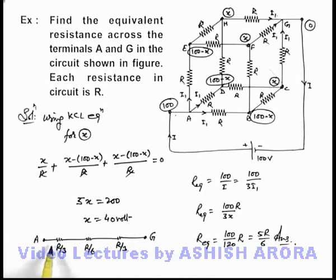Now if you just calculate the equivalent resistance of these 3 resistances in series, you can see that you are getting it as 5R by 6, because in series combination we just need to add up the resistances. So sum of these 3 resistances we are getting is 5R by 6.